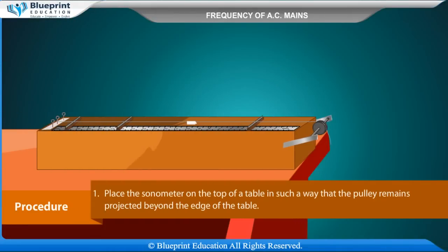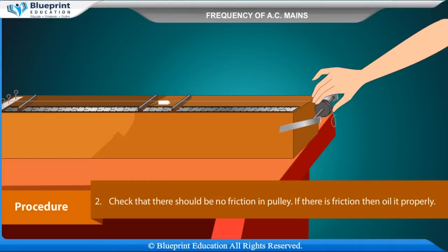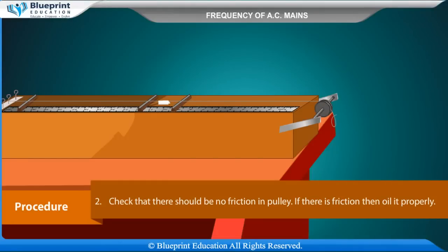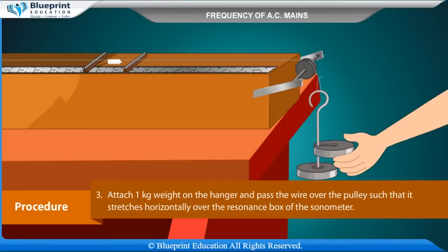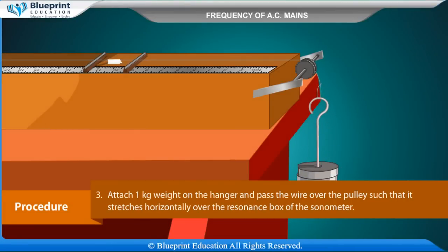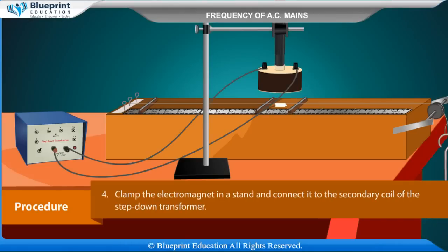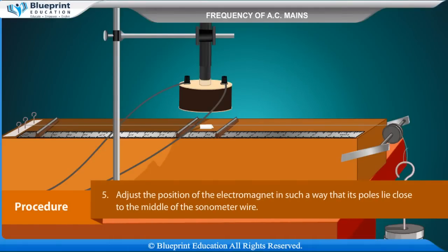Procedure: Place the sonometer on top of a table such that the pulley remains projected beyond the edge of the table. Check that there should be no friction in the pulley; if there is friction, oil it properly. Attach 1 kg weight on the hanger and pass the wire over the pulley so it stretches horizontally over the resonance box. Clamp the electromagnet in a stand and connect it to the secondary coil of the step-down transformer. Adjust the electromagnet so its poles lie close to the middle of the sonometer wire.